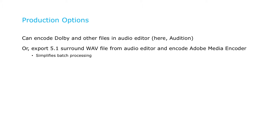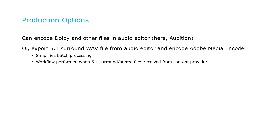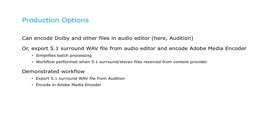This makes it easy to set up batch processing for all of your encoded files. Or you might even receive 5.1 surround WAV files, and possibly stereo as well, from your content provider. To cover all of these alternatives, let's export to a WAV file and encode in the Adobe Media Encoder.